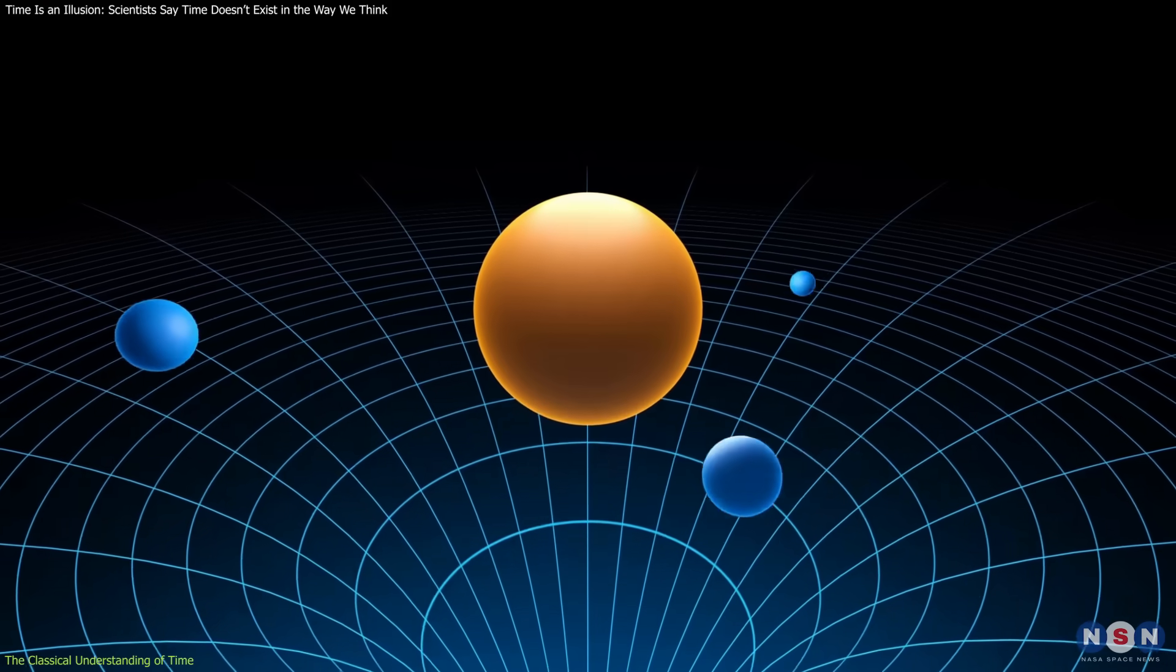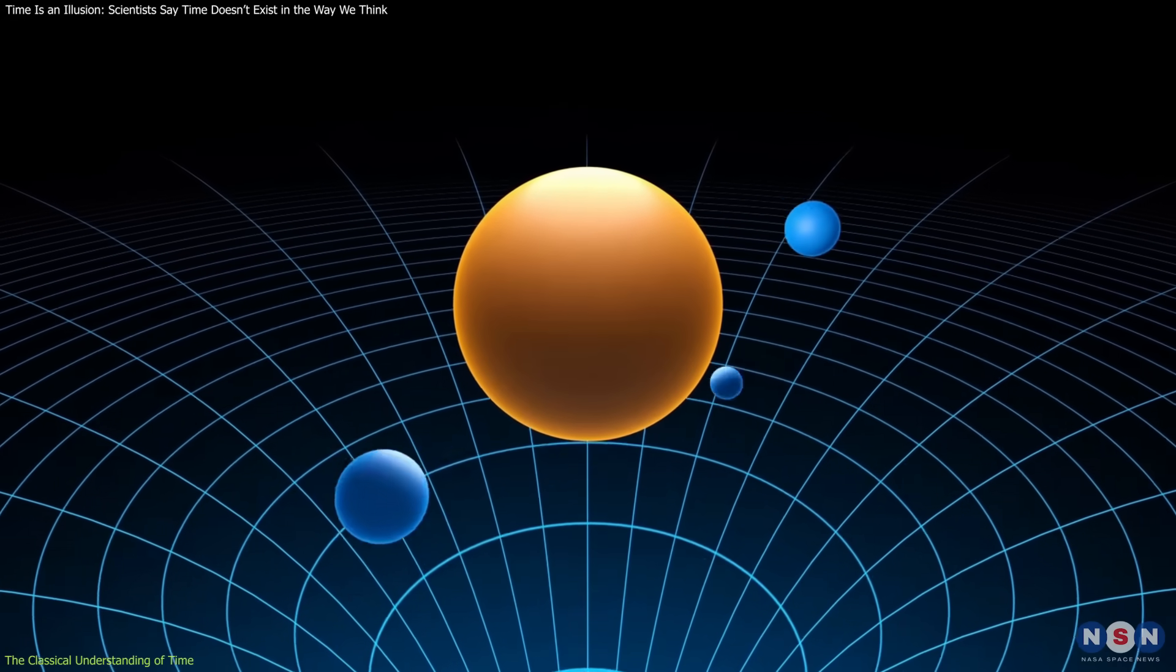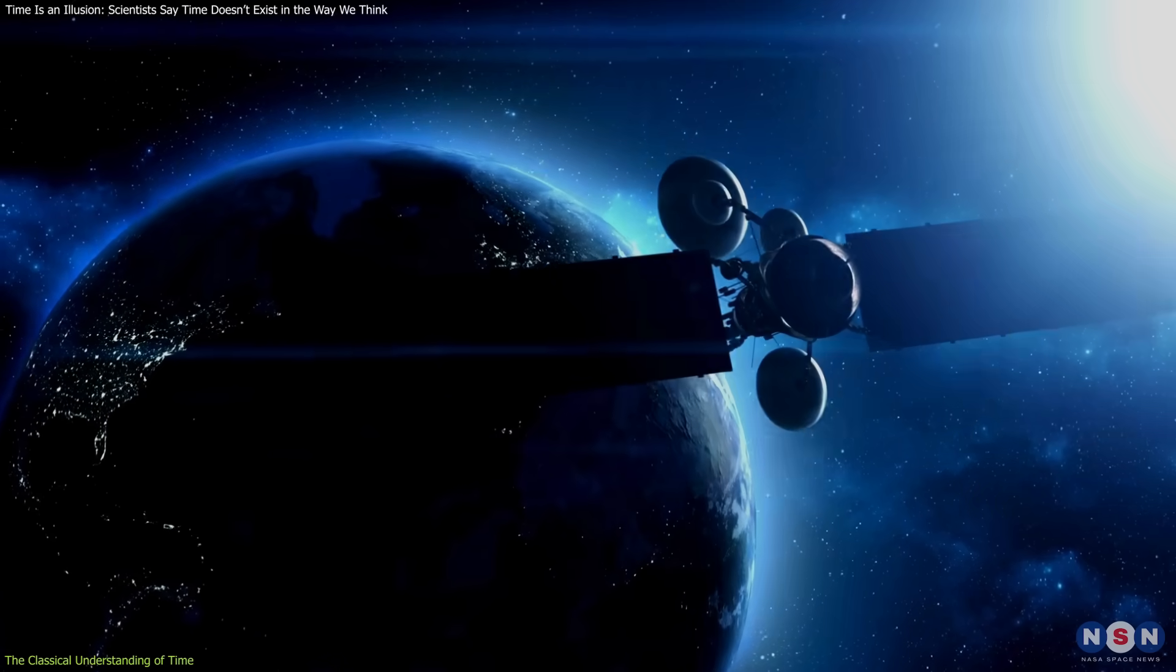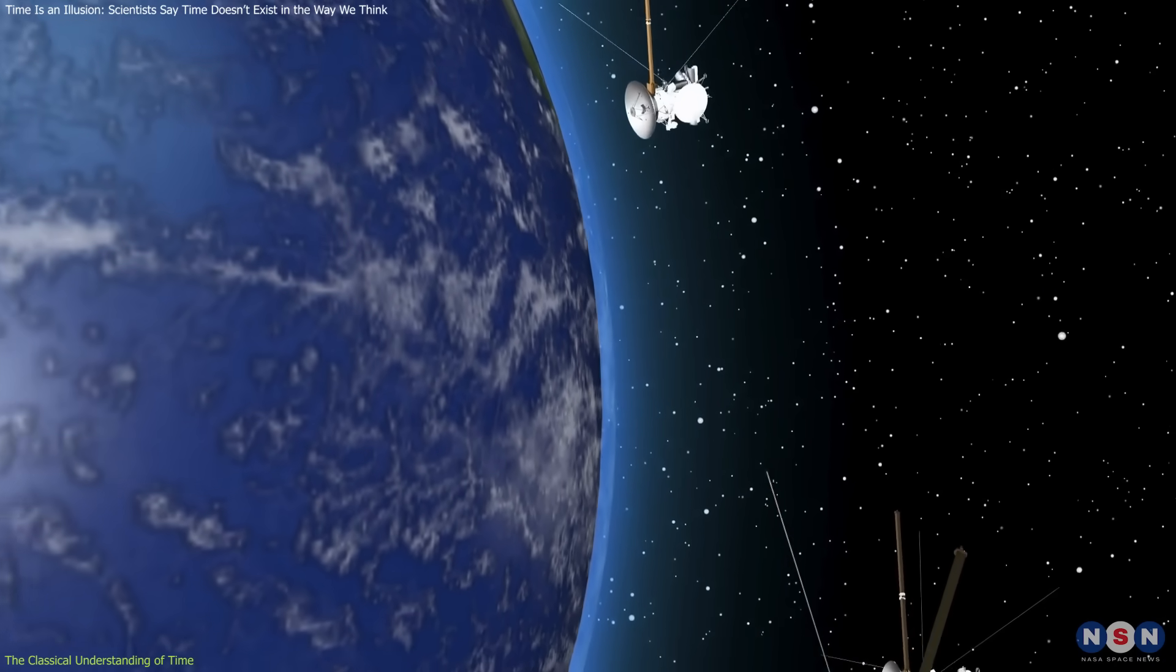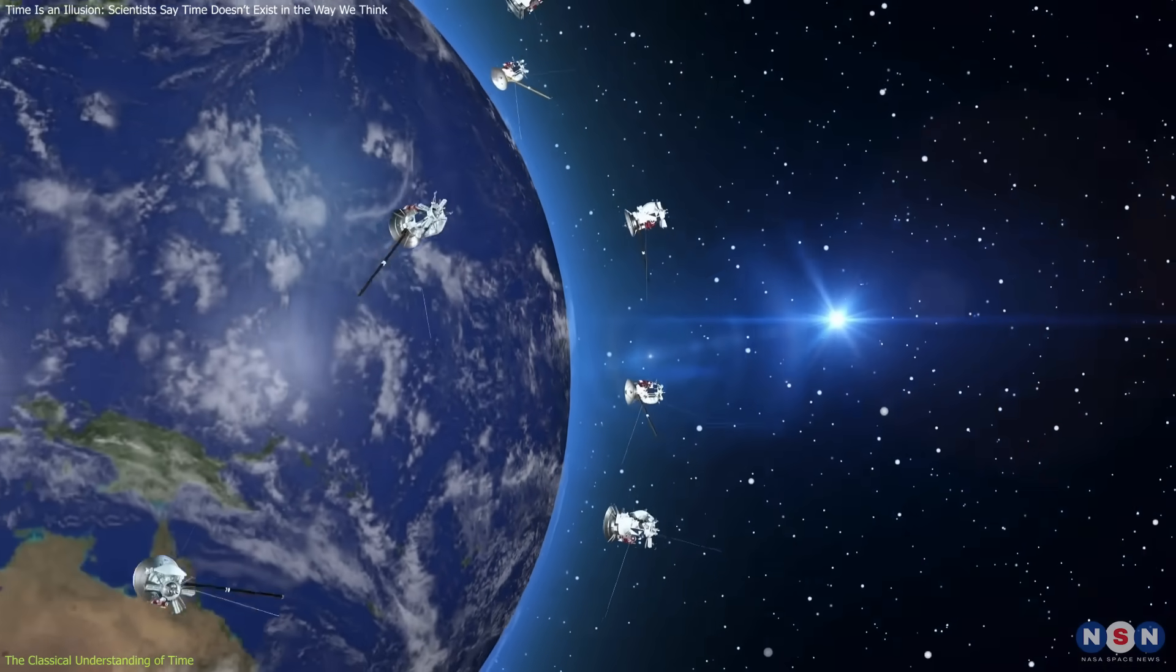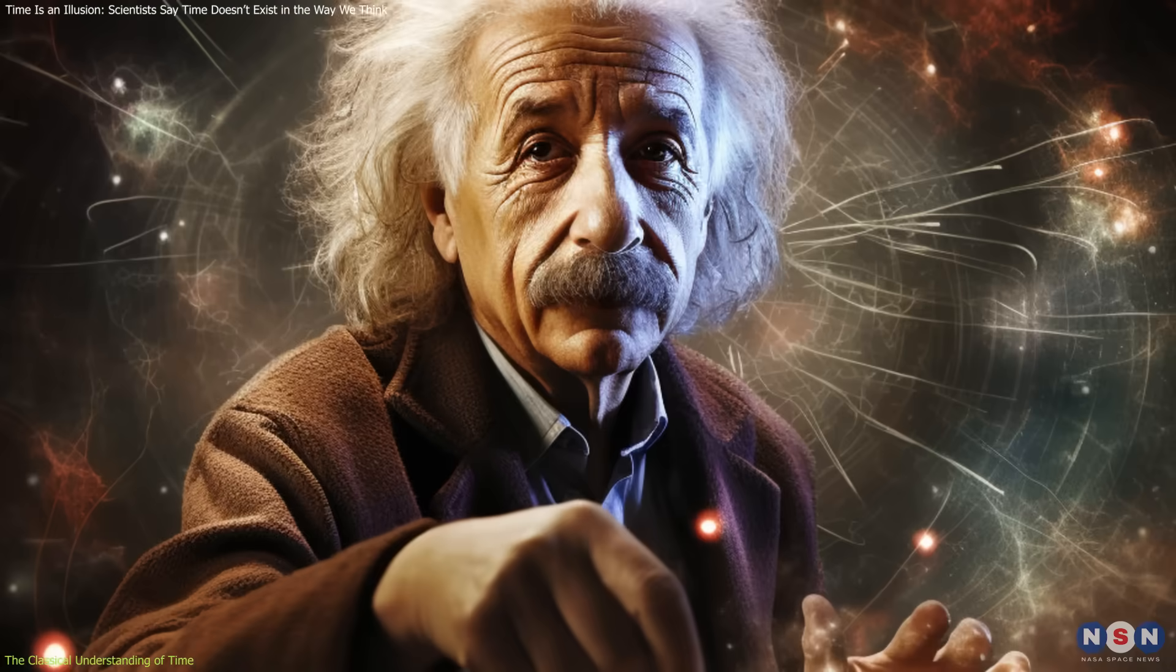These relativistic effects are not just theoretical musings, but have practical implications. GPS satellites orbiting Earth experience both reduced gravity compared to the planet's surface and high velocities relative to an observer on the ground.